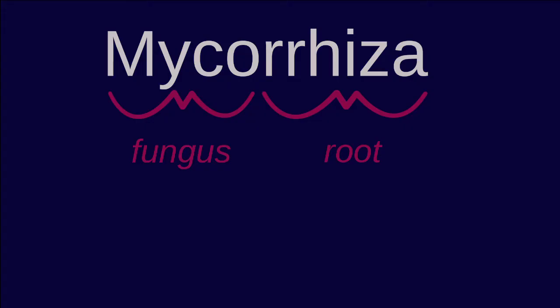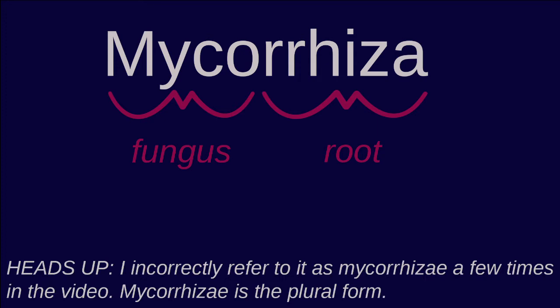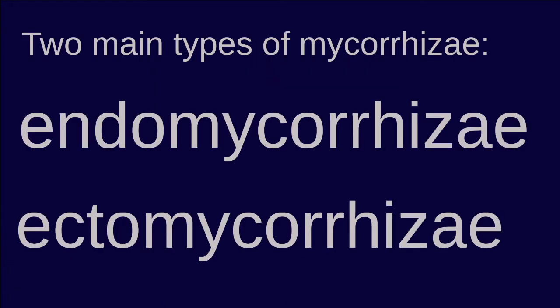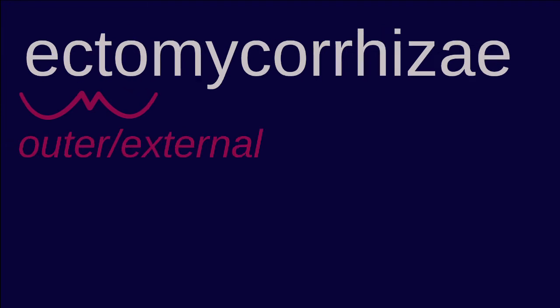Mycorrhiza is the symbiotic relationship between a fungus and the roots of a host plant. Instead of, say, decomposing a log for nutrients, mycorrhizal fungi gets its food from plants in underground connections. There are two main types of mycorrhizae: endomycorrhizae and ectomycorrhizae.